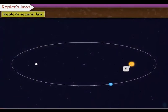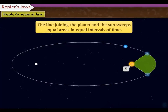Kepler's second law: The line joining the planet and the sun sweeps equal areas in equal intervals of time.